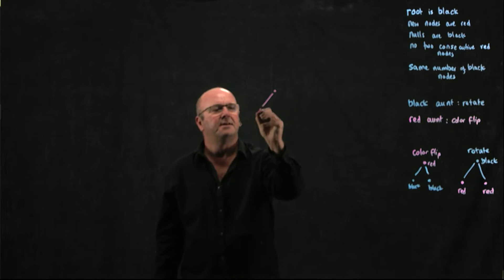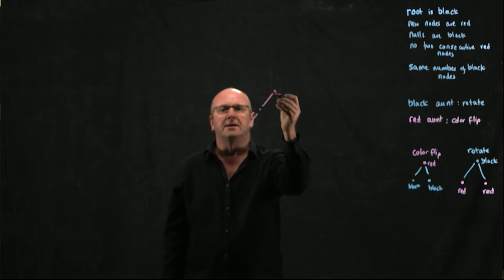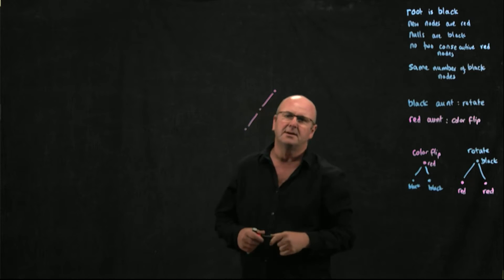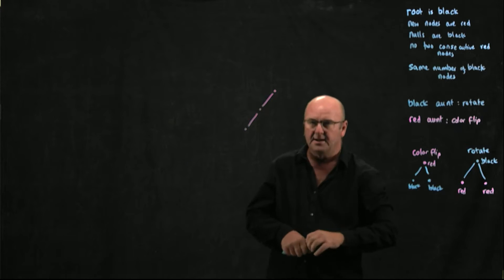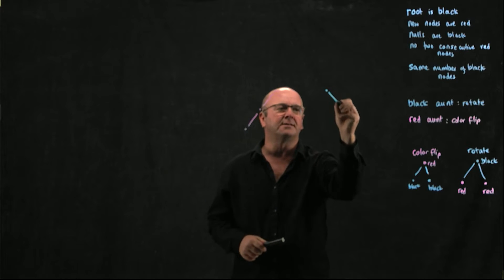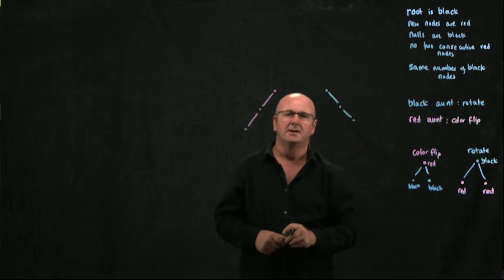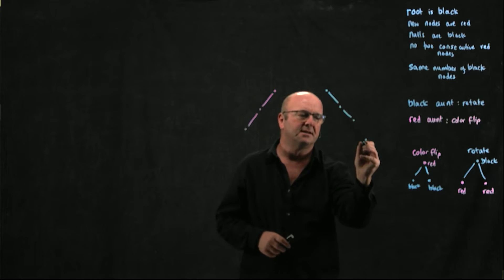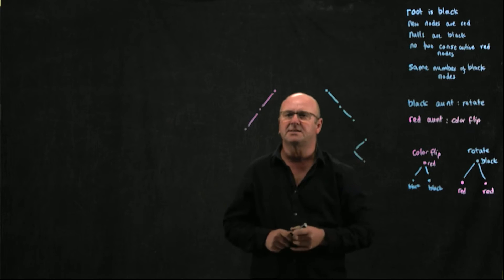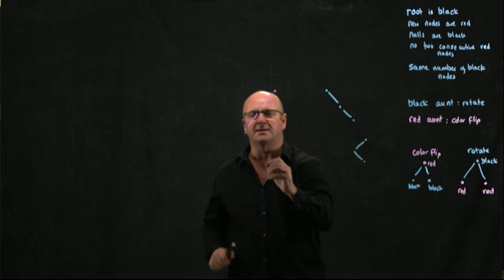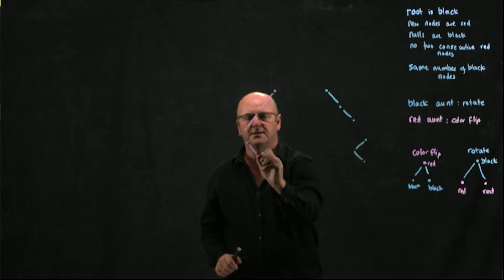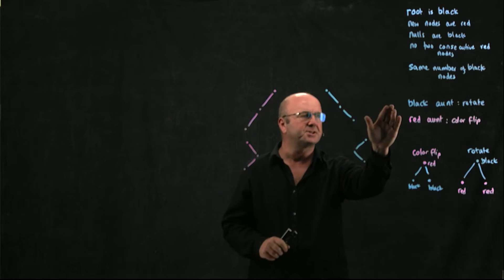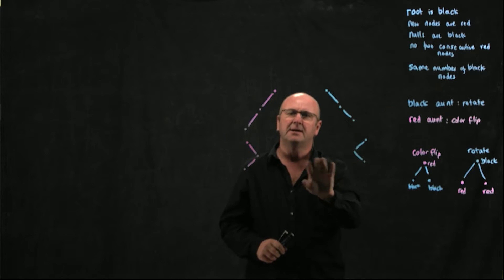If we have the imbalance in the grandparent's left child's left subtree, we do a right rotation. If the imbalance is in the grandparent's right child's right subtree, we do a left rotation. If it's in the grandparent's left-right, we do a left-right rotation, and if it's in the grandparent's right-left, we do a right-left rotation. Same rules as we've already seen for other trees.